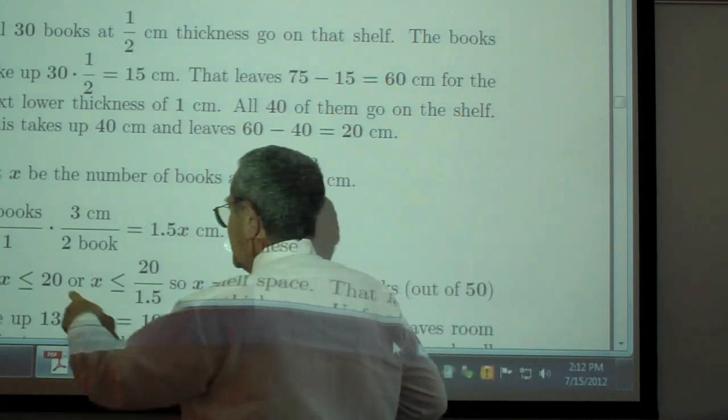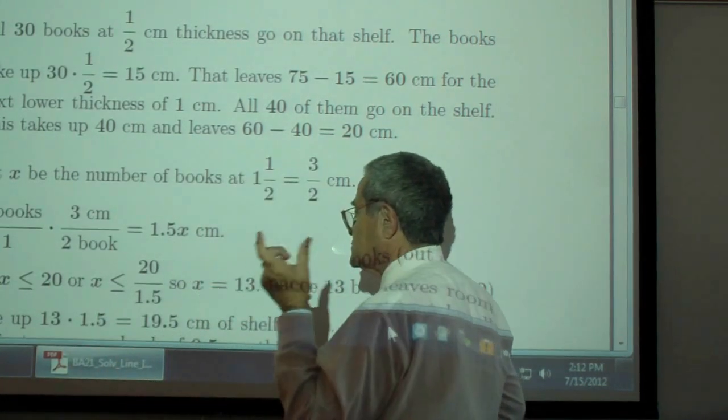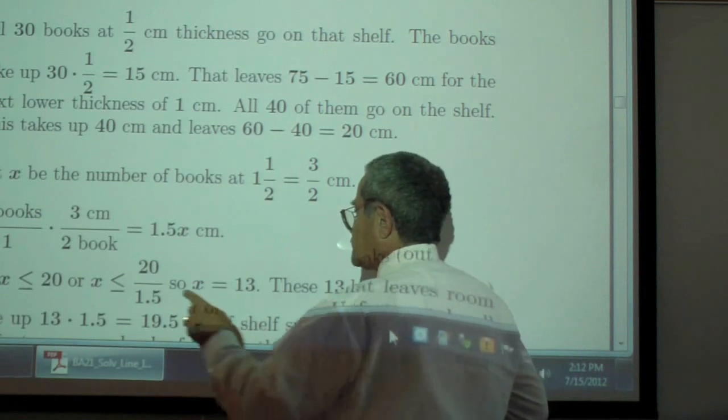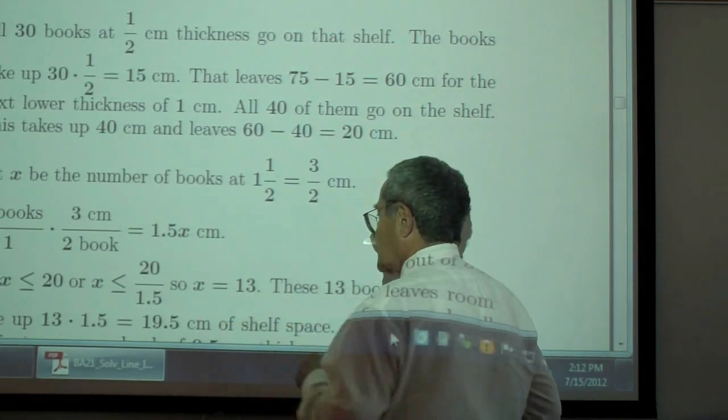That has to be less than or equal to the remaining 20 centimeters that are not filled. Divide by 1.5, you come out with 13.